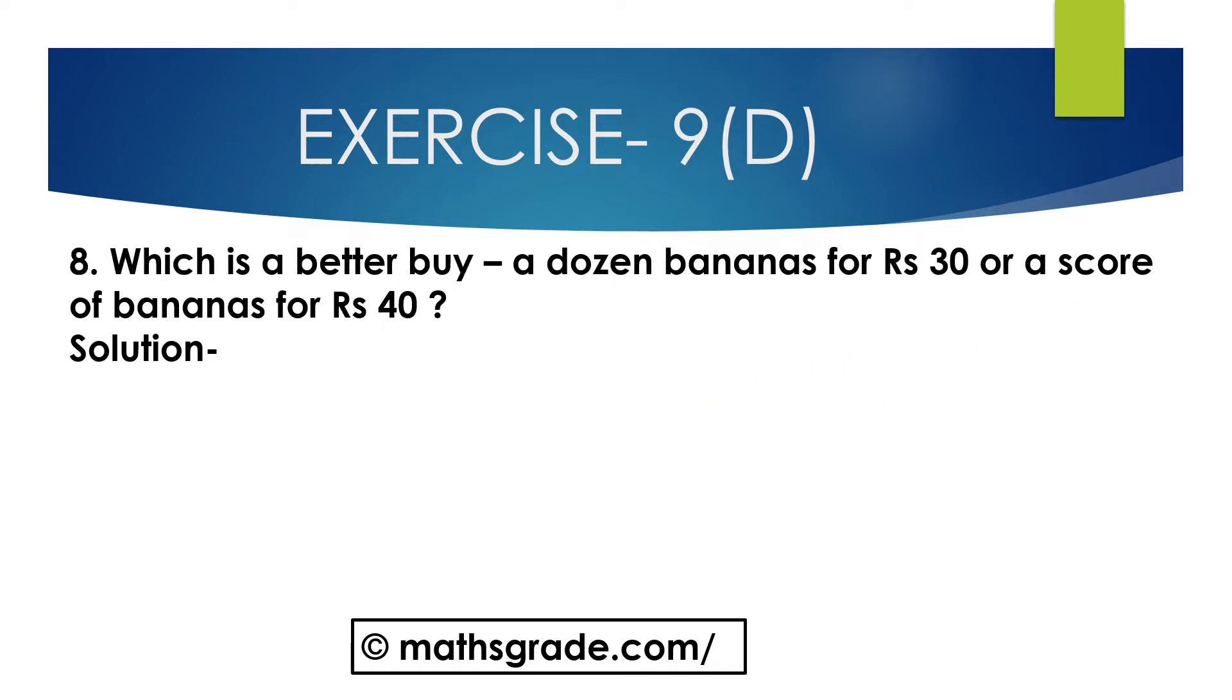Now question number 8, which is a better buy: a dozen bananas for Rs. 30 or a score of bananas for Rs. 40. A dozen means 12. 12 bananas cost Rs. 30, so 1 banana will be Rs. 30 divided by 12. Rs. 2.50.